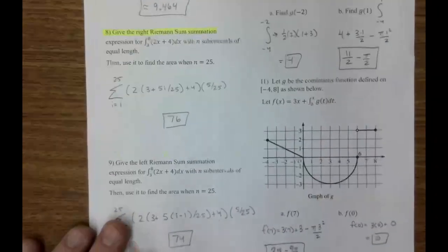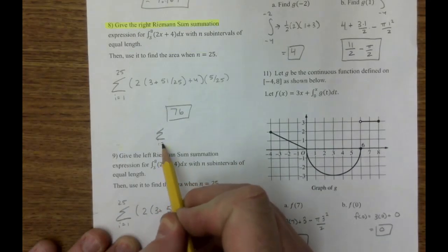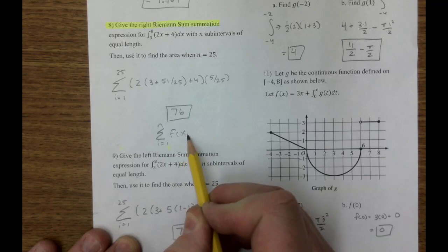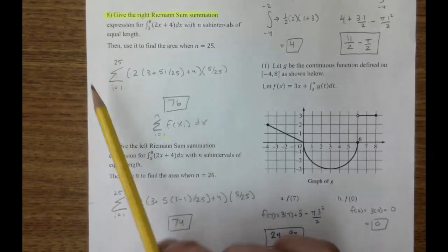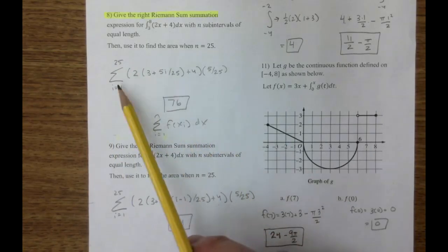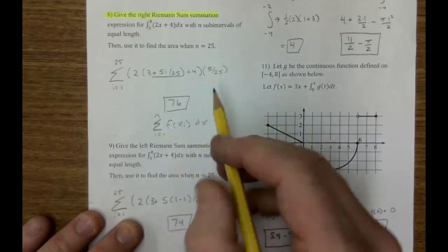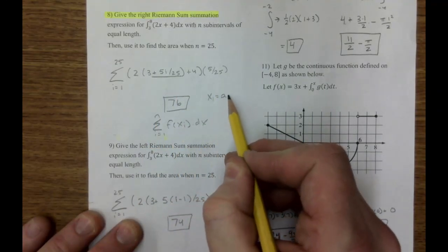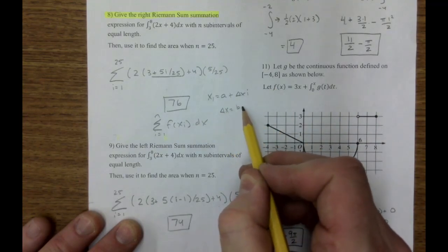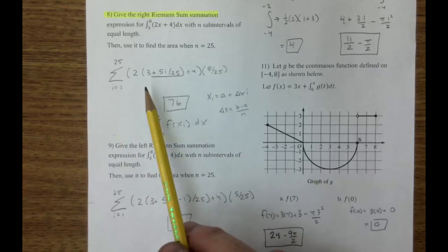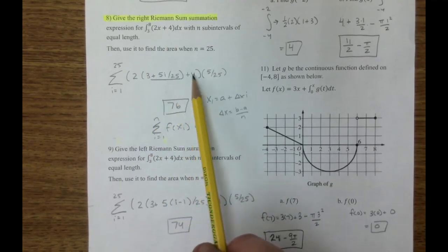All right, next thing you want to be able to do is write this summation notation. Again, it comes from this basic formula. This basic formula needs to turn into this. It is one to twenty-five of two plus my x sub i. x sub i is a plus delta x i. And delta x, again, is b minus a over n. So there's my formula. Two x plus four. Two x plus four.